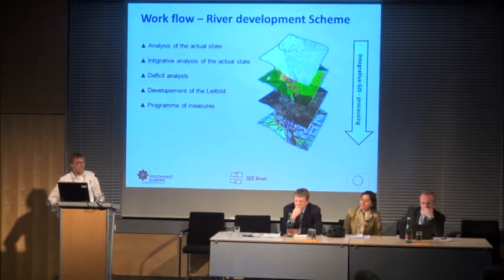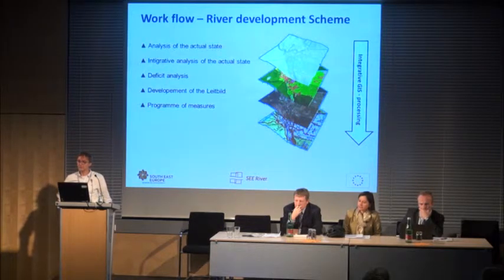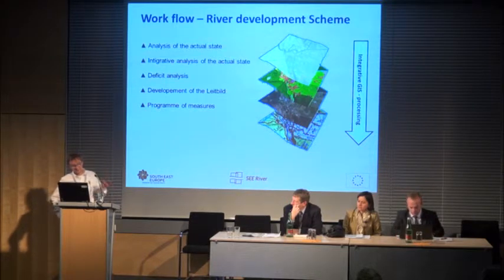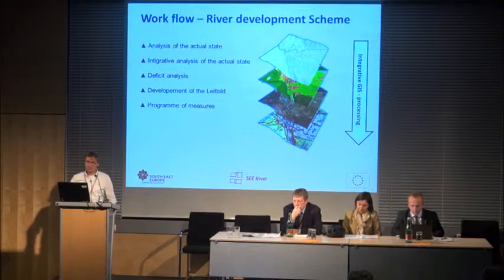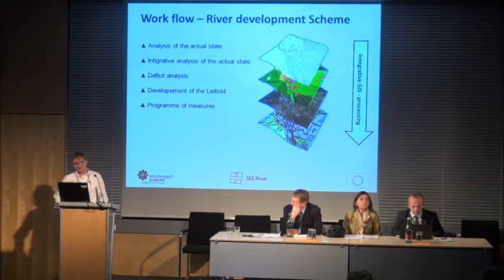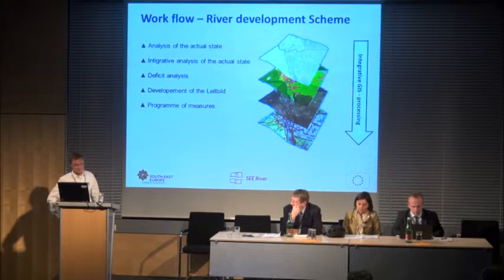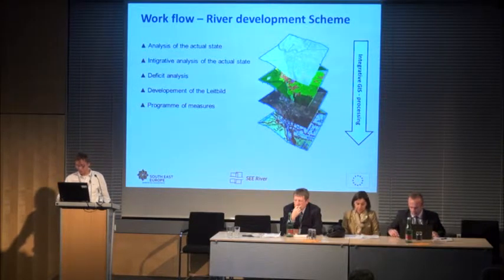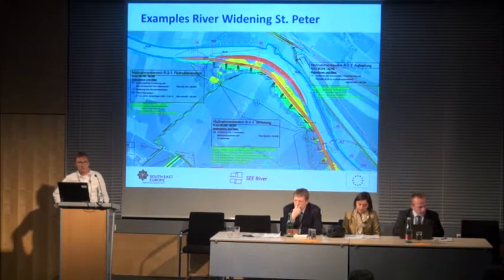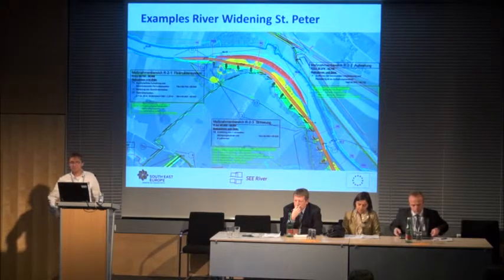The workflow of the River Development Scheme, which is an integrative planning tool in Austria, begins with assessing the actual state and analyzing it. Then we make an integrative analysis of both sectors together and a deficit analysis. We developed a mission statement called Leitbild, and at the end we have a program of measures. This was the situation in 1991. We see at the Upper Drau here an example of the river widening at St. Peter.